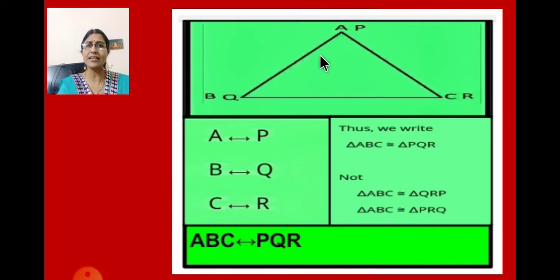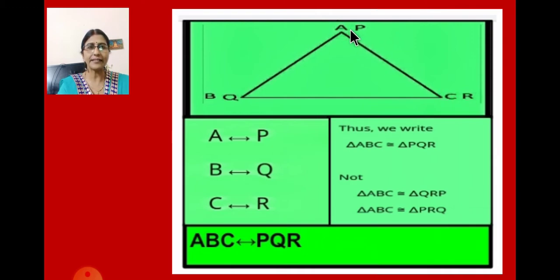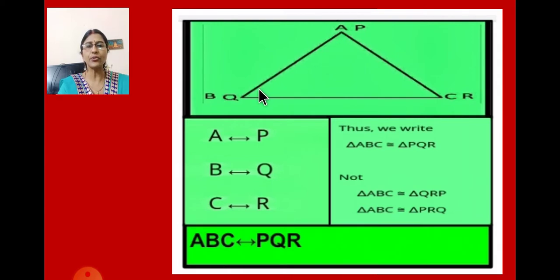Similarly, the sides are also corresponding to each other. Side AB is corresponding to side PQ. Side BC is corresponding to QR. And the third side AC is corresponding to PR of the second triangle. So sides are also corresponding to each other. Even the angles are corresponding: angle A is corresponding to angle P, angle B is corresponding to angle Q, and angle C is corresponding to angle R. Thus we write triangle ABC is congruent to triangle PQR.